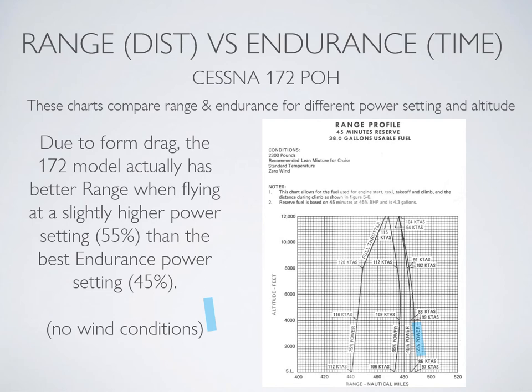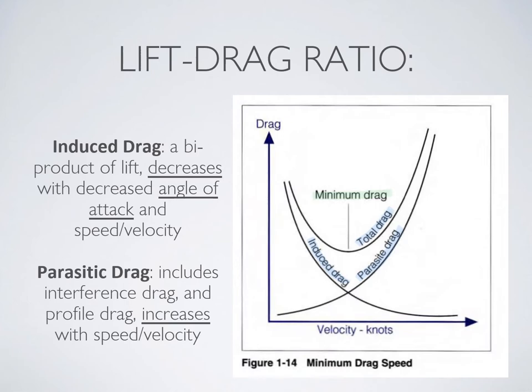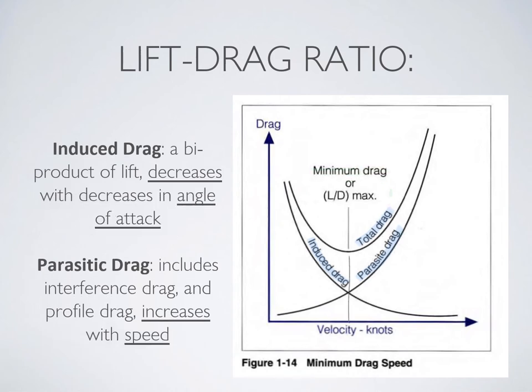Let's talk about drag for a minute. Going back to the flight training manual in exercise 10, you'll find a graph showing two types of drag acting on an aircraft. Induced drag is a byproduct of lift and decreases with velocity. Parasite drag includes form drag and friction drag and increases as your airspeed increases. Therefore, total drag — which is both combined — is minimized at the airspeed where parasite drag overcomes induced drag.